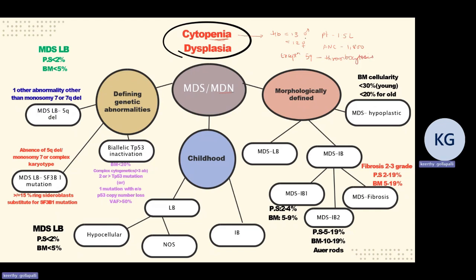MDS is more common in elderly patients, particularly in the 6th and 7th decade. However, in Asian populations, it is seen in younger age groups. In general, MDS is more common in male patients in the 6th to 7th decade. MDS with 5Q deletion, however, is more common in females and can present with thrombocytosis.